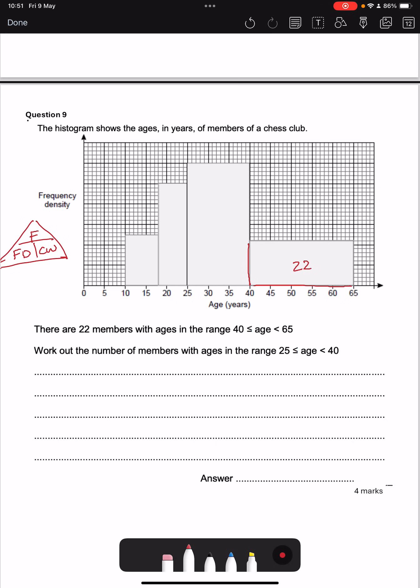So the frequency is going to be the area. We don't know the scale for the frequency density but we can use this to help us. This has got a length of 25. Let's call the height x. So 25 times by x equals 22 area of a rectangle, and that gives us x equals 0.88. So let's mark that onto our diagram. This is 0.88. So I'm going to work out what each square is going to be. There are 11 little squares underneath that. So it's going up in 0.08.